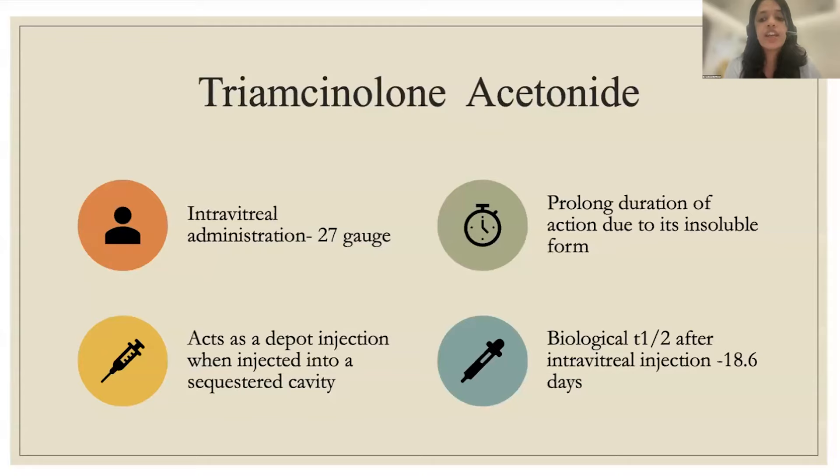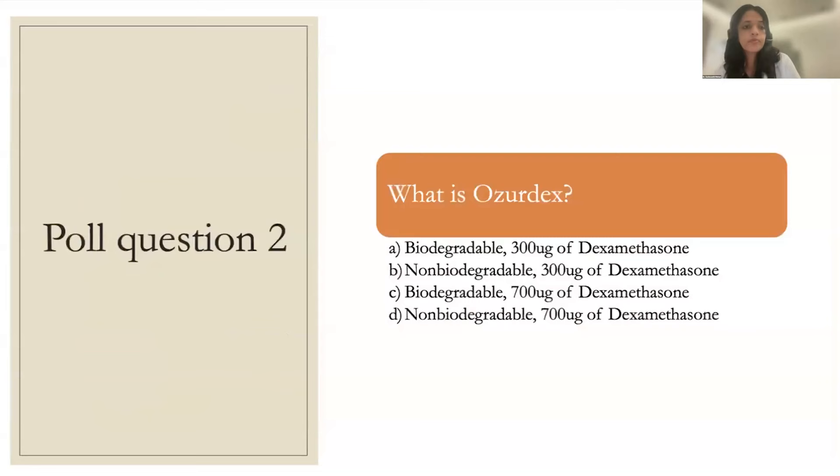Steroids are contraindicated in patients with hypersensitivity, active ocular or periocular infections, and glaucoma with a cup-to-disc ratio greater than 0.8. The dexamethasone implant (Ozurdex) requires additional caution in patients with torn posterior capsules, aphakic eyes, or those with anterior chamber or scleral-fixated IOLs, due to risk of the implant migrating into the anterior chamber. Multiple case reports have documented this migration.